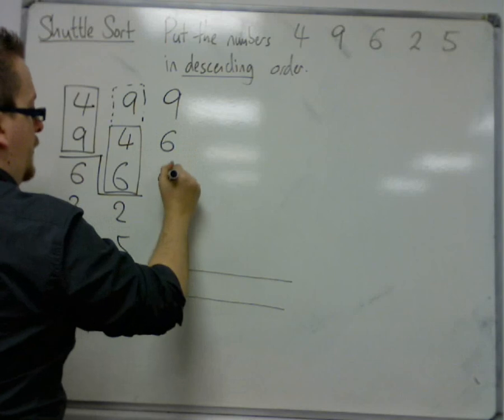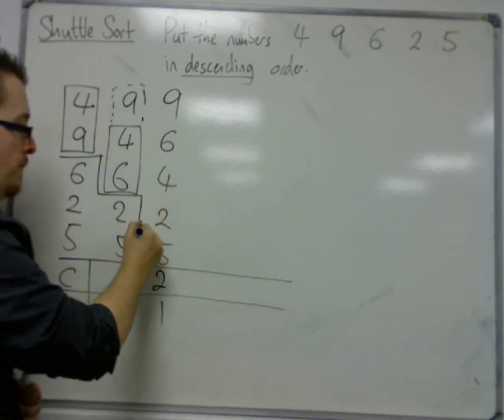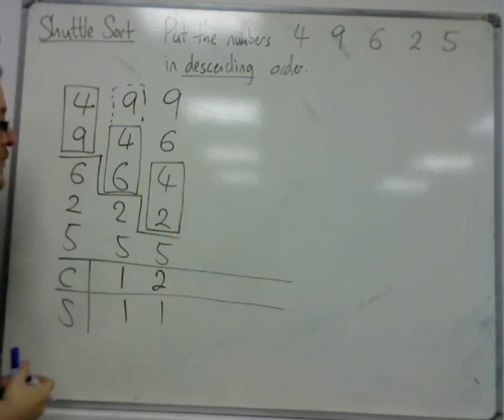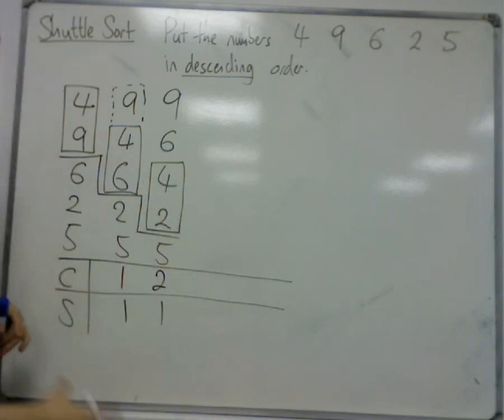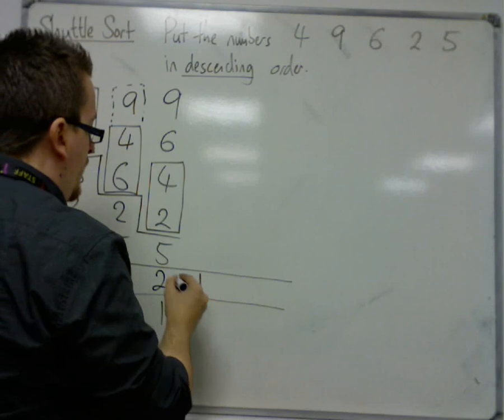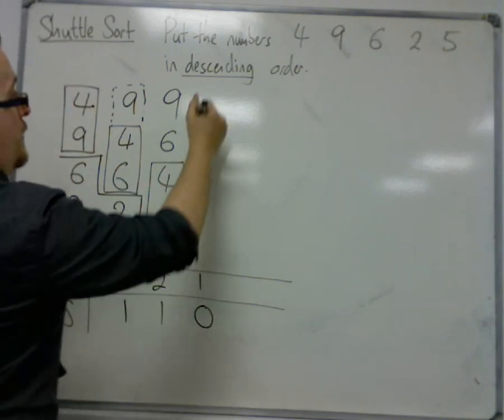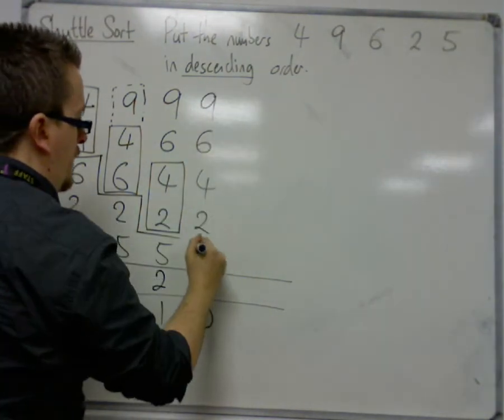So I now have 9, 6, 4, and I've got the 2 and the 5. I drop down a level and make the comparison between the 4 and the 2. The 4 and the 2 are in the correct order, so I don't need to make any swaps or other comparisons. One comparison but zero swaps. I've now got 9, 6, 4, 2, and then 5.